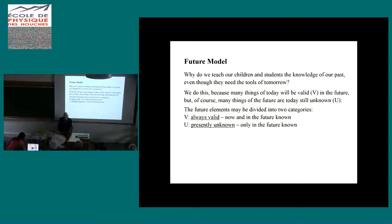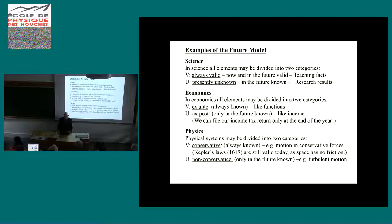We can try to find examples for this future model. In science, all elements may be divided into two categories: always valid now and in the future (teaching facts) or presently unknown, in the future known (research results). In economics, all elements may be divided into ex ante, always known like functions, and ex post terms, only known in the future like income. We can file our income tax return only at the end of the year.